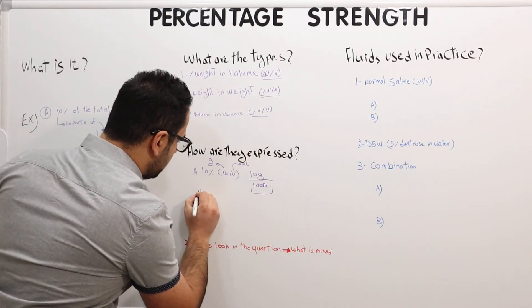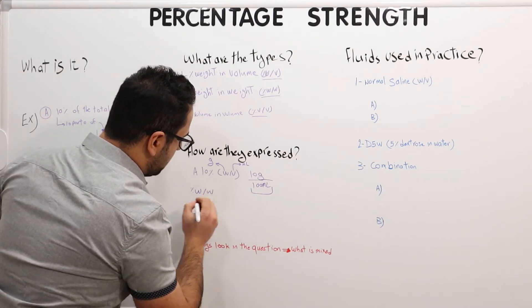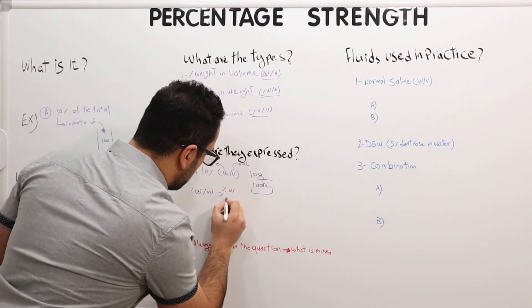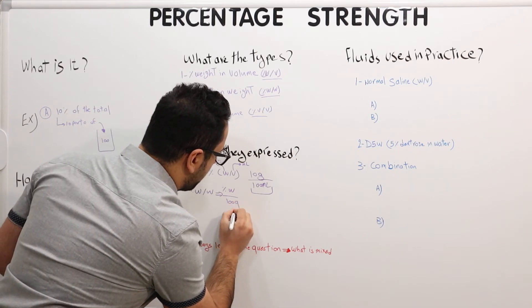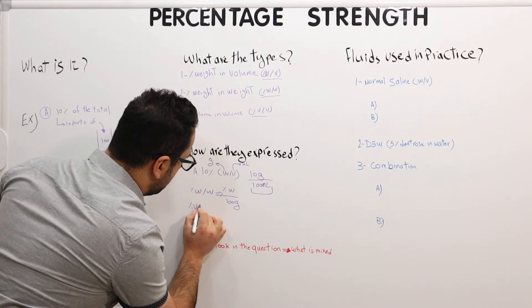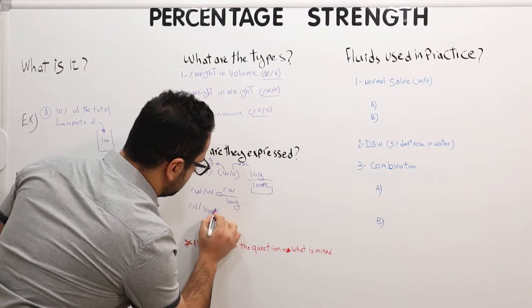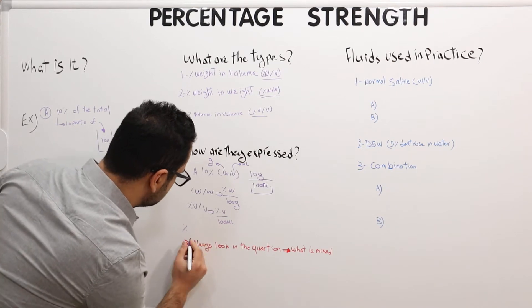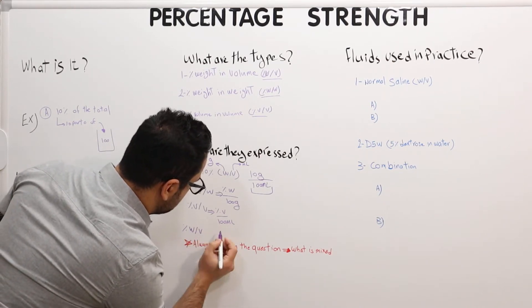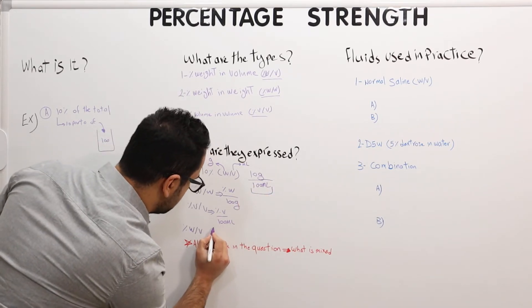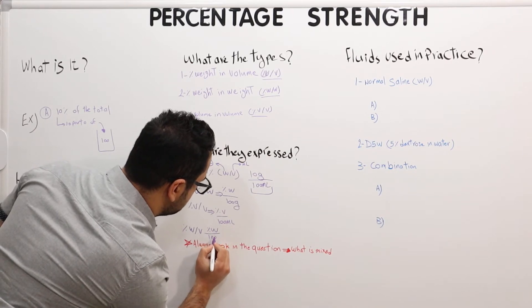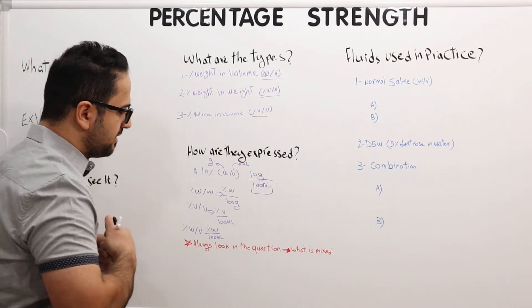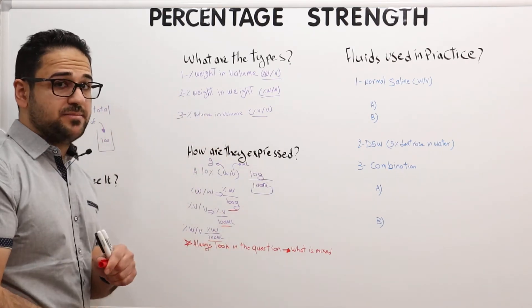One thing that I want to make sure you understand is that the denominator is always 100. If it's percent weight in weight, it's going to be percent weight, depending if it's 10 percent, 5 percent, or 2 percent, over 100 grams. If it's percent volume in volume, it's going to be percent volume over 100 milliliters. And if it's percent weight in volume, it's going to be percent weight over 100 milliliters. So it's very important to keep in mind that the denominator is always 100 whether it's grams or milliliters.